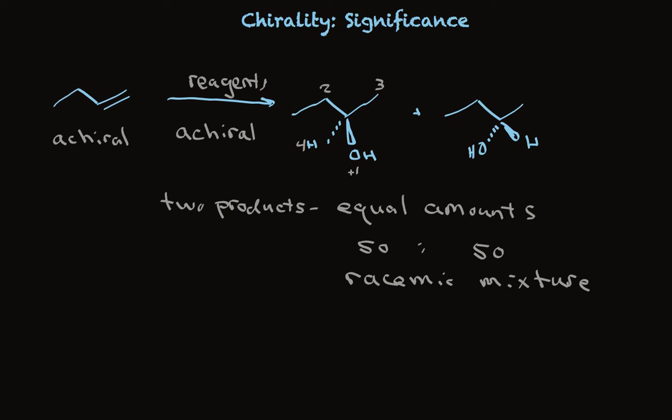We find that the lowest priority group is away from us. You notice I do that on purpose. Whenever I get a chance, I put that fourth group away from us and we go in a circle from one to two to three.